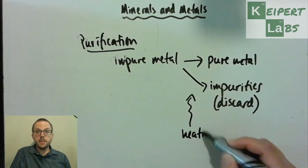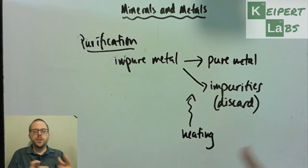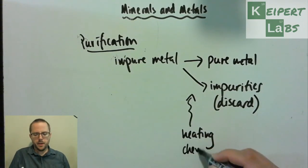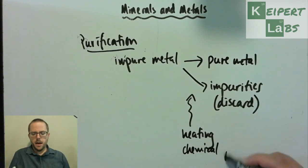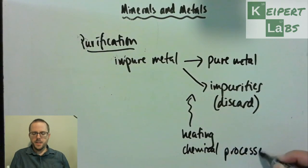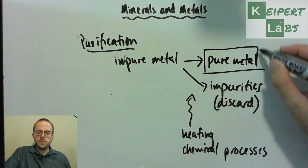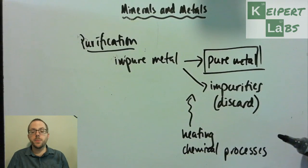So we might do things like heating. We might do other chemical processes that take away some of those impurities. It could be lots of different things. That's not really something that we're going to go to in a lot of depth, but the idea then is that through this process, we end up with a sample of pure metal, or at least as pure as we can get it. But then we can take and we can use in some other situation.